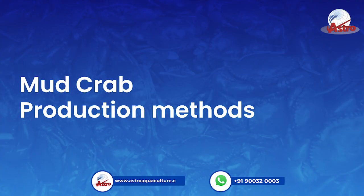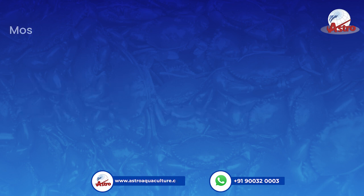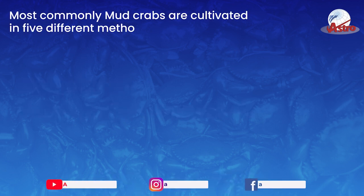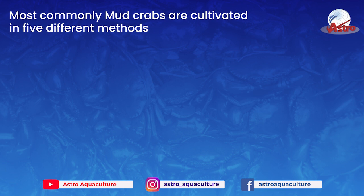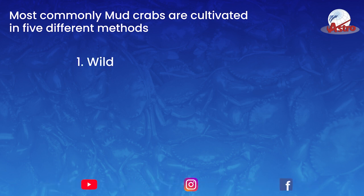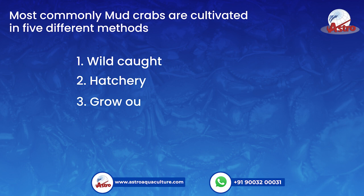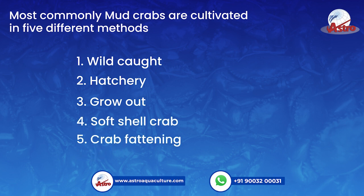Mud Crab Production Methods: Most commonly, mud crabs are cultivated using 5 different methods: Wild Caught, Hatchery, Grow Out, Soft Shell Crab, and Crab Fattening.